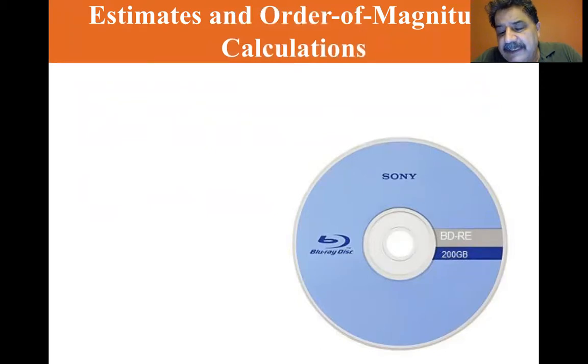If the multiplier is less than 3.162, which is the square root of 10, then the order of magnitude of the number is equal to the power of 10 in scientific notation. If the multiplier is greater than 3.162, which is the square root of 10, then the order of magnitude, you go one larger than the power of 10 in scientific notation. Now the symbol, the tilde means, is on the order of.